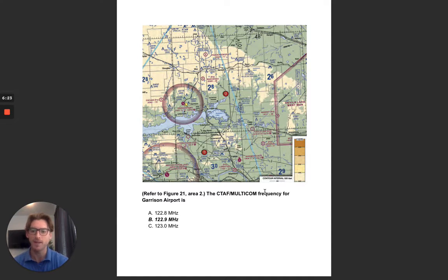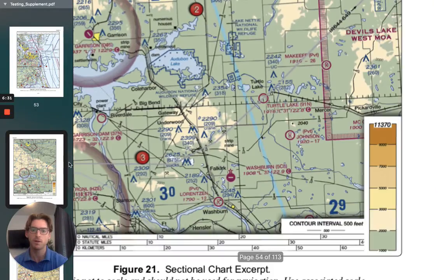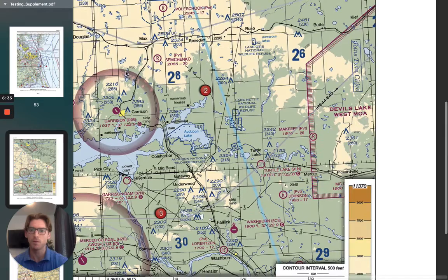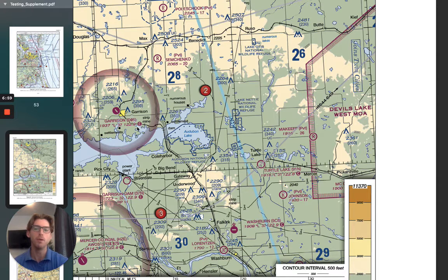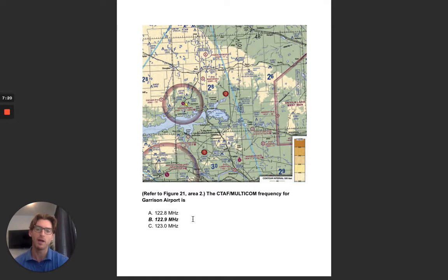The CTAF/Multicom frequency for Garrison Airport is — so I'm going to go to figure 21, area 2, which is page 54. I'm looking for Garrison Airport right here. I see Garrison — it says 1937, which is the altitude of the airport. It has lights with that L there. And we have 122.9 with a C. When you have that C bolded, that means it's the CTAF frequency. It always comes after the frequency, written first and then that C after it. So if there are two frequencies written, you know the CTAF one is the one written right before that C. So 122.9 is your answer.